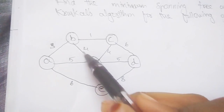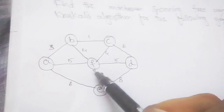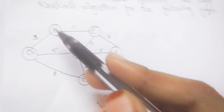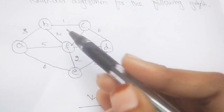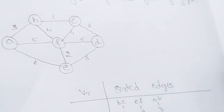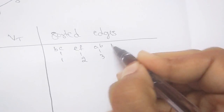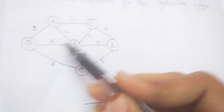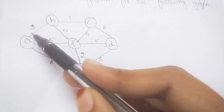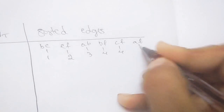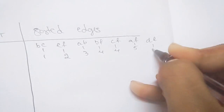Next is AB with weight 3. Then BF and CF both have the same weight of 4, so we go in alphabetical order: BF first, then CF. After that, AF and DF both have weight 5, so again alphabetical order: AF with weight 5, then DF with weight 5.